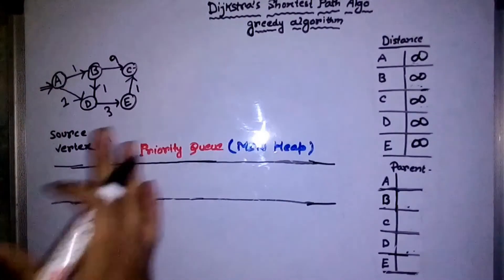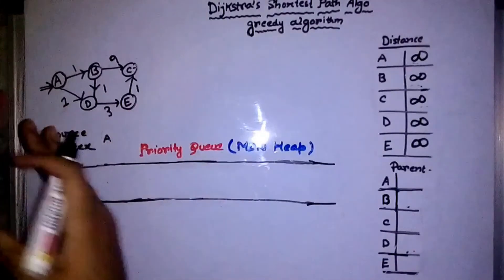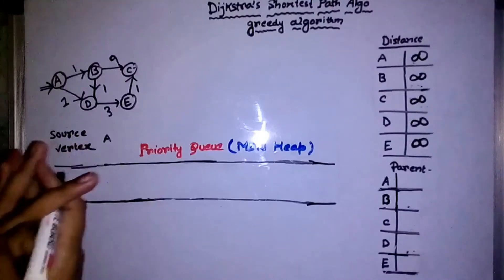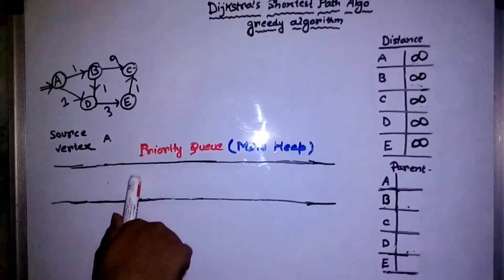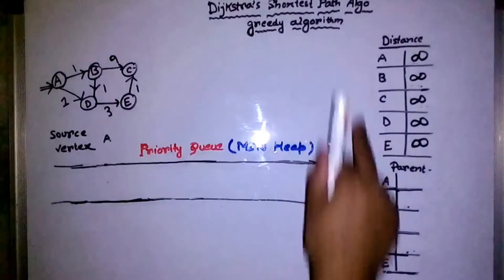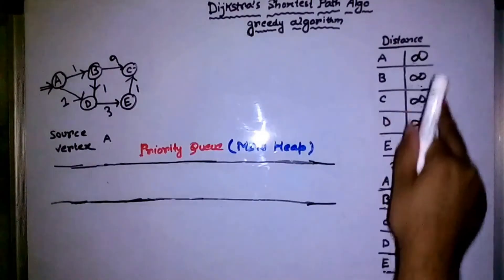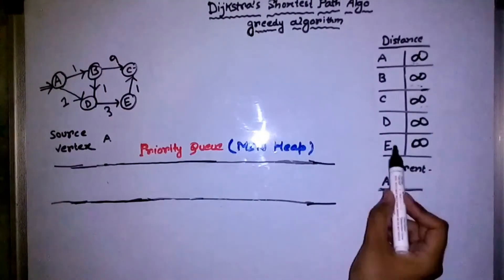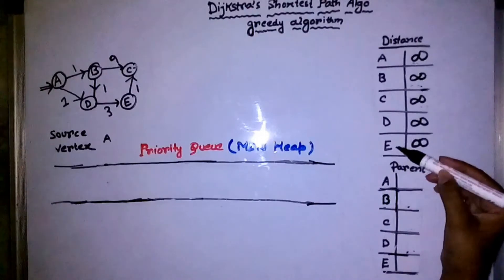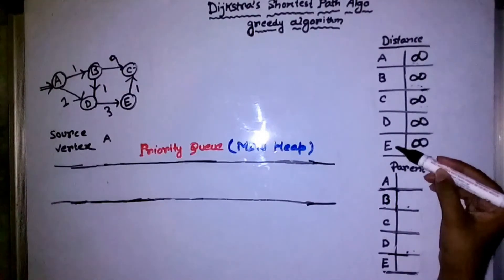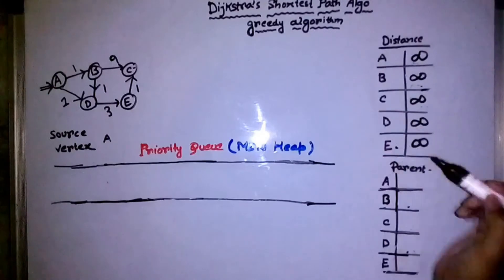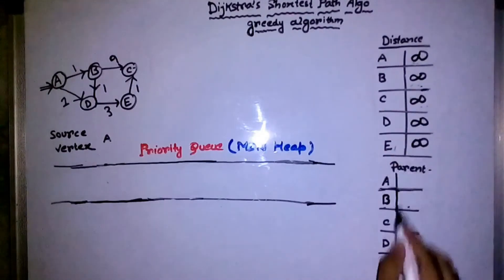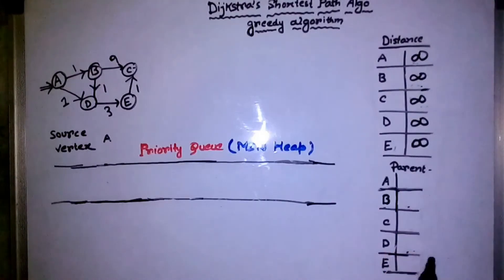Let's see how we can find the shortest path from one source to all other vertices using Dijkstra's algorithm. To perform Dijkstra's algorithm, we need three data structures: one priority queue and two arrays. The first array contains the shortest distance from the source to each vertex, and the parent array is very useful for printing the actual shortest path.